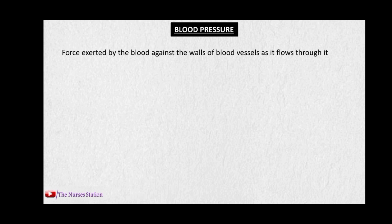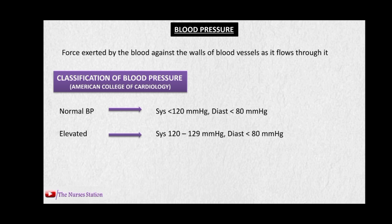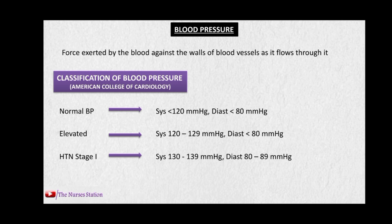The next vital sign is blood pressure — the force exerted against blood vessel walls when the left ventricle contracts. Per the American College of Cardiology: normal BP is systolic less than 120 mmHg and diastolic less than 80 mmHg; elevated is systolic 120–129 with diastolic less than 80; hypertension stage 1 is 130–139 systolic or 80–89 diastolic; hypertension stage 2 is 140 mmHg or above systolic or 90 mmHg or above diastolic.